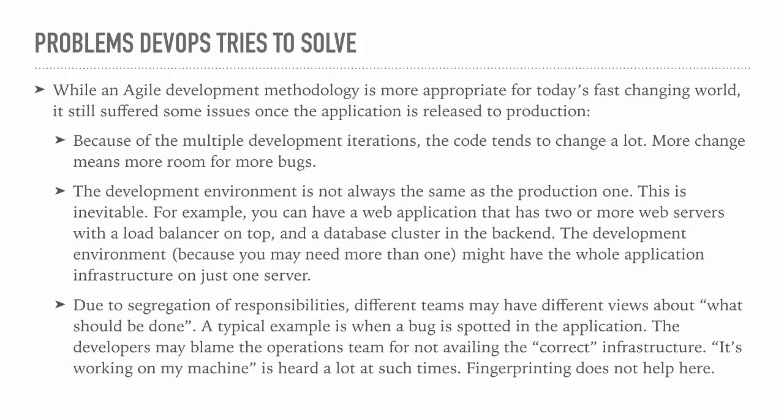Third, due to segregation of responsibilities, different teams may have different views about what should be done. A typical example is when a bug is spotted in the live application: developers may blame the operations team for not providing the correct infrastructure — 'it's working on my machine' is a very famous phrase. On the other hand, the operations team will confirm that both environments are the same and no changes have been made. So finger pointing does not help here.